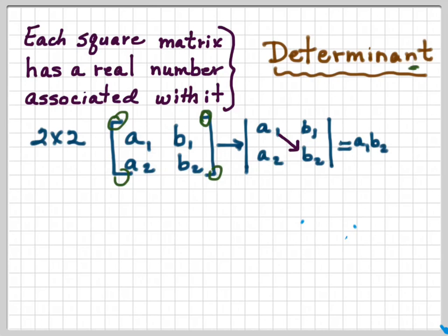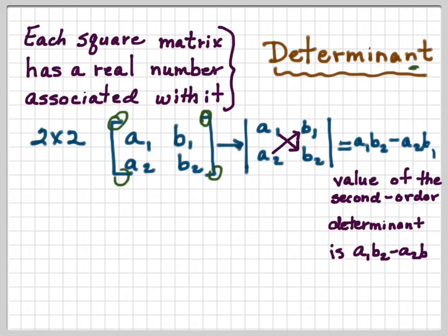What we do is we start with row 1, column 1, and we multiply that term by its diagonal term. So a1 times b2, whatever that value is. And then we're going to subtract from that a2 times b1. So we're just doing a little crisscross here. And that's the value. We can say the value of the second order determinant is a sub 1 b sub 2 minus a sub 2 b sub 1.